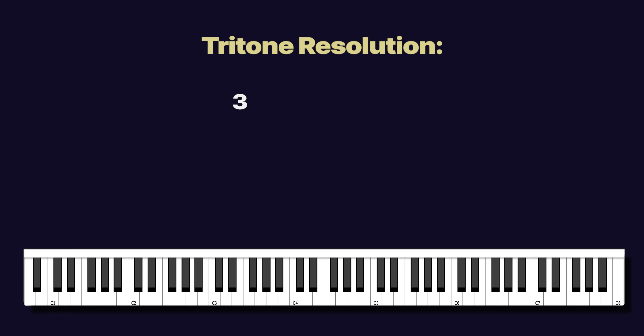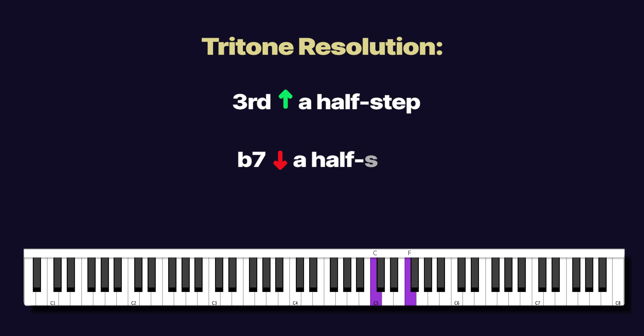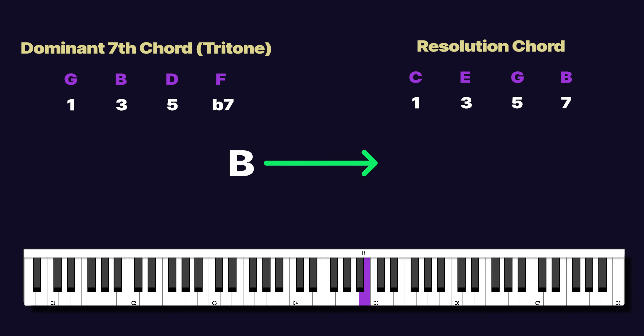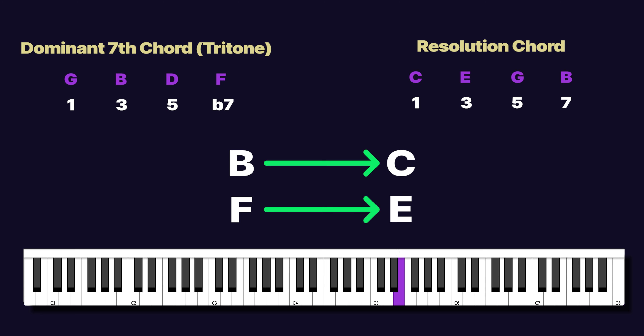Here's how tritones in dominant chords resolve. The third resolves up a half step and the flat seven resolves down a half step. The third of the dominant chord resolves to the root of the resolution chord, and the flat seven resolves to the third of the resolution chord. That's the expected and anticipated resolution for every dominant chord, which means our ears are naturally tuned to resolving chords in this very specific way.